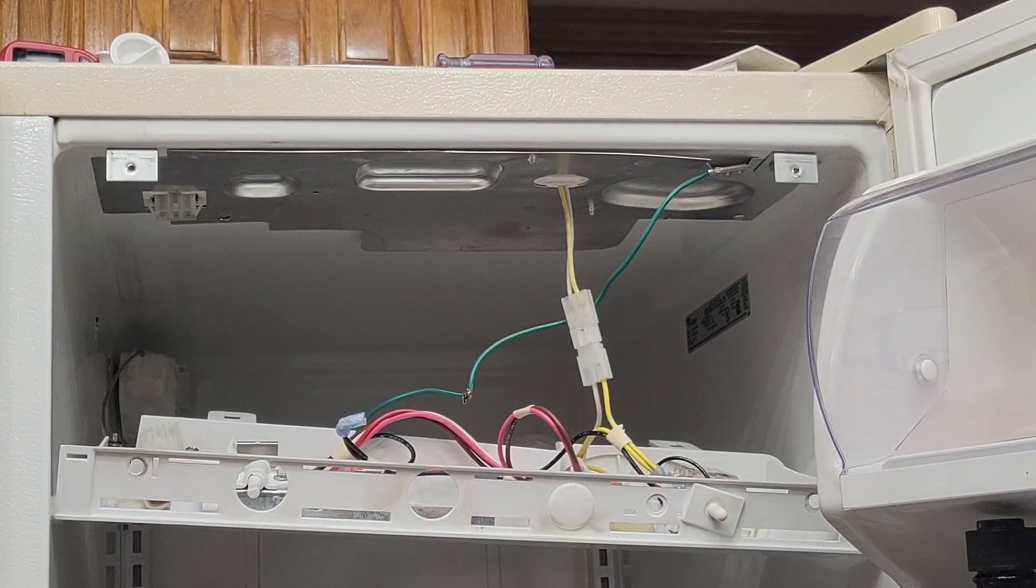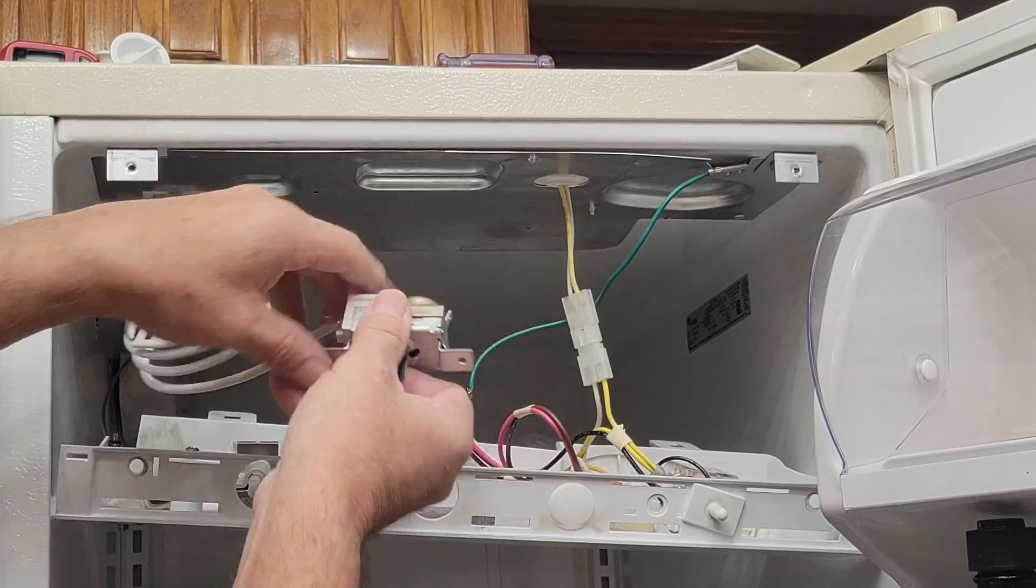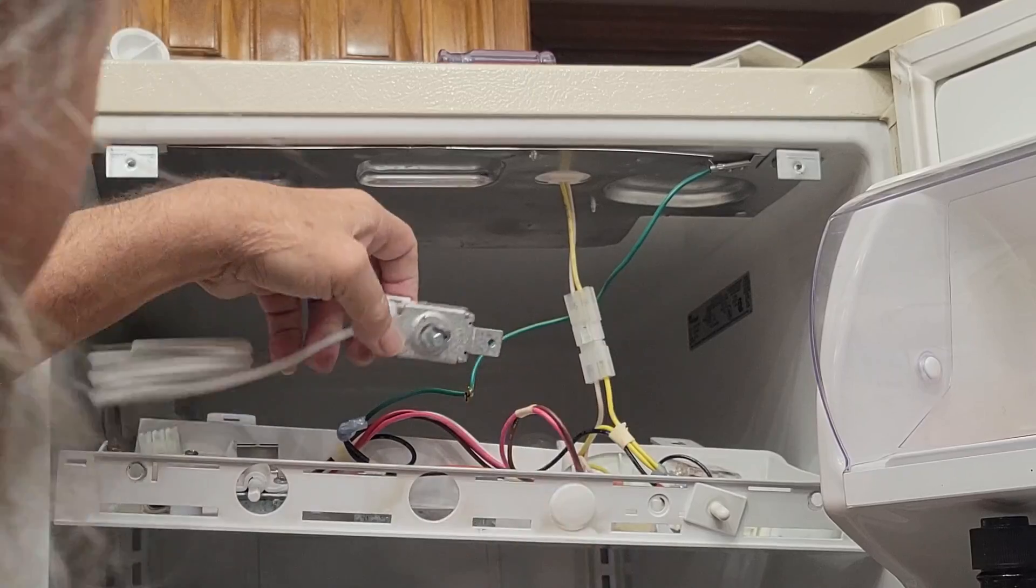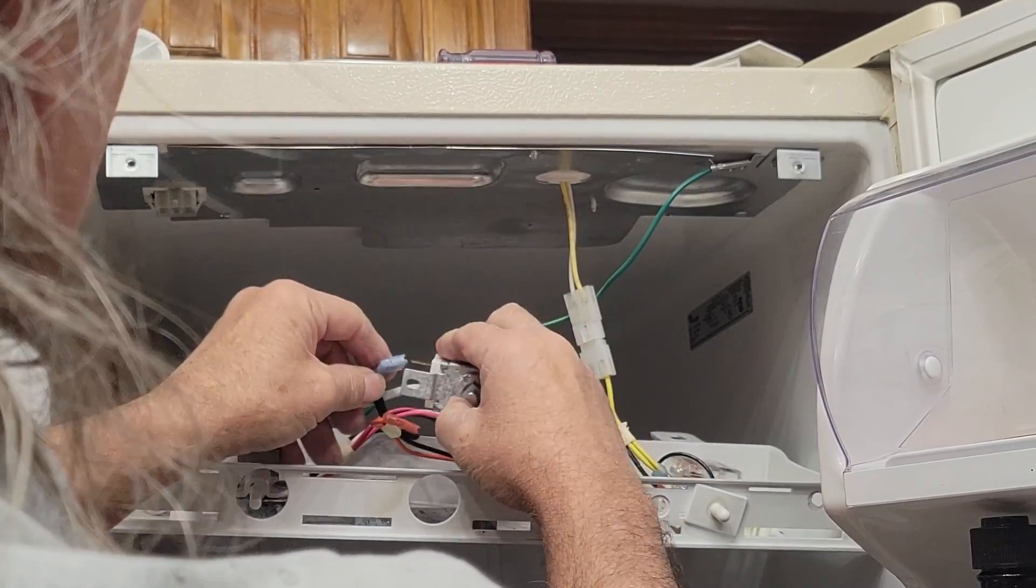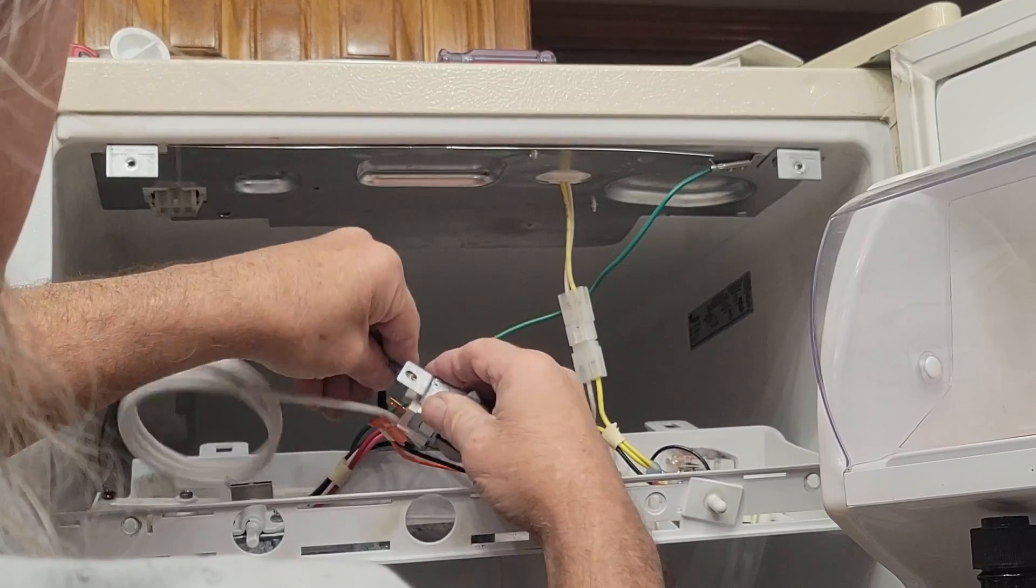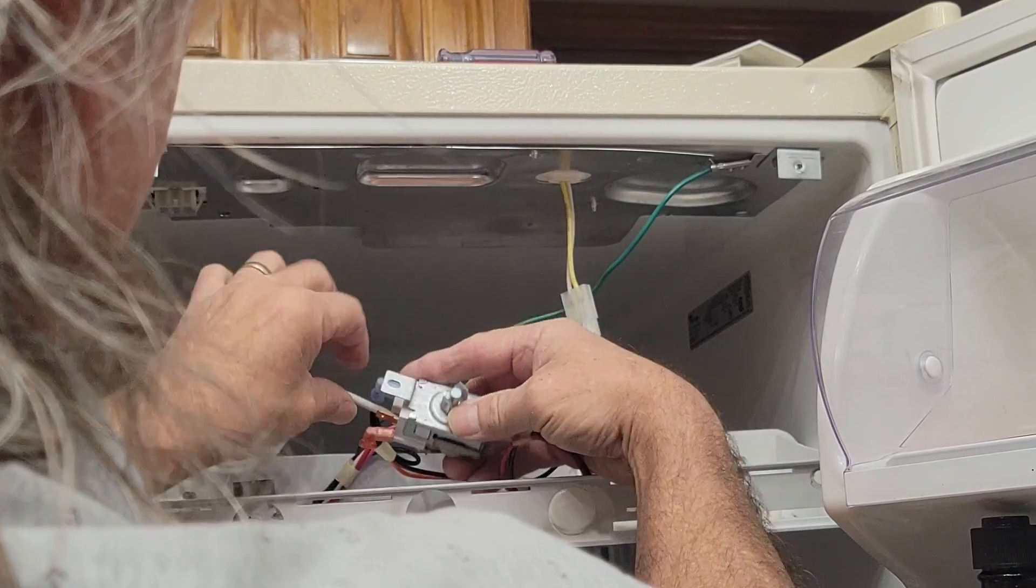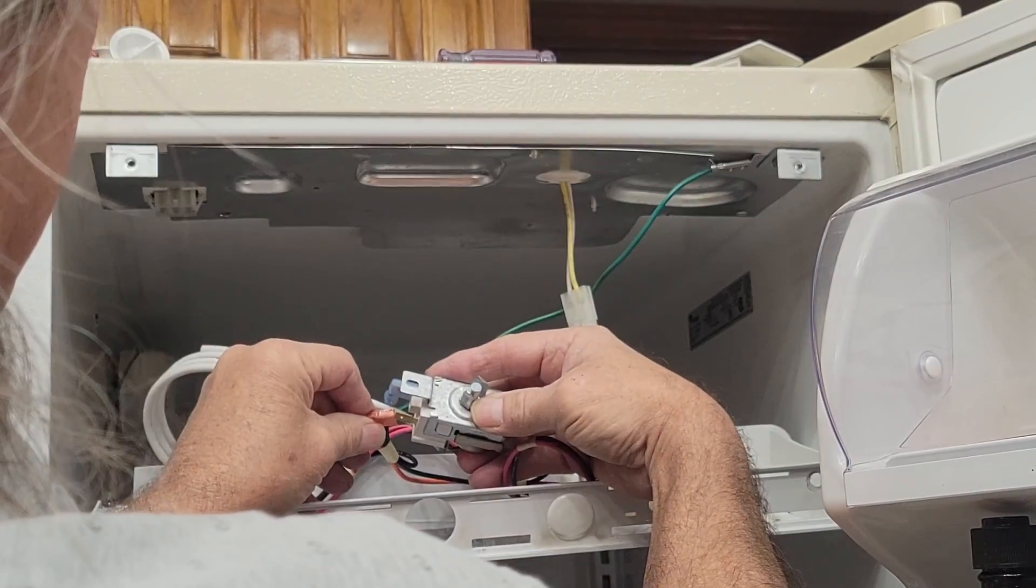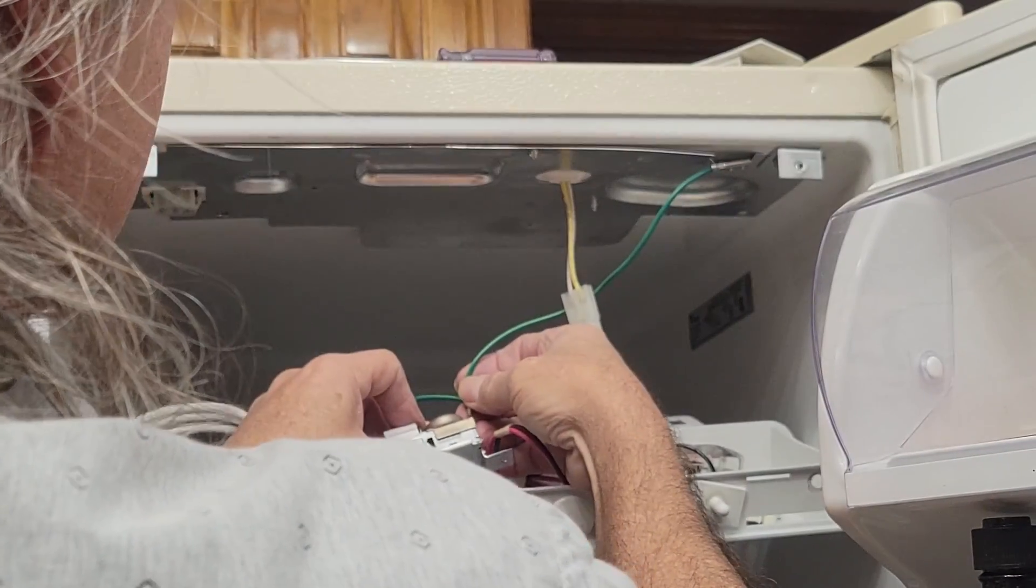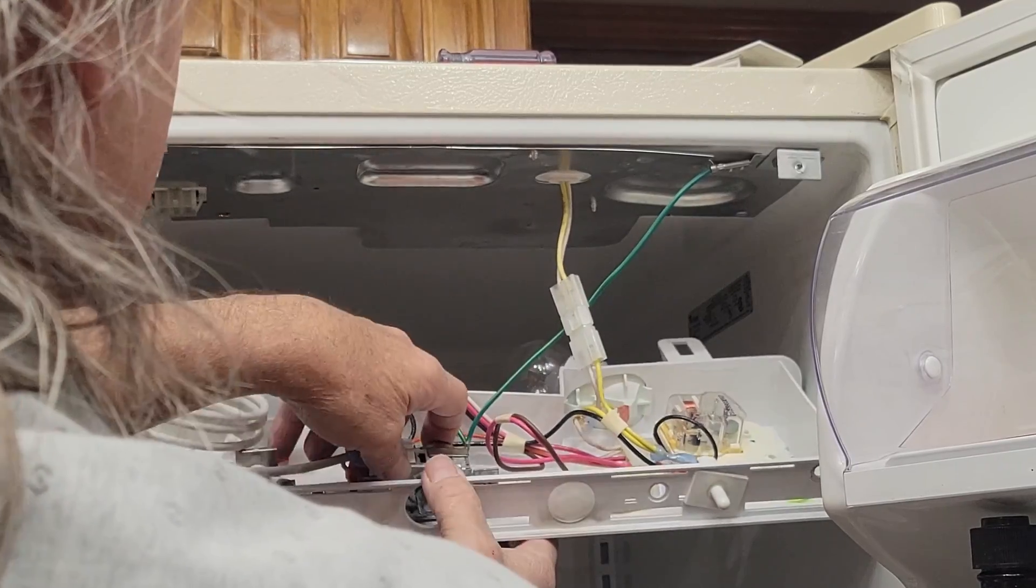We'll take our new thermostat and unravel this, prepare it for its journey backwards. Get the plugs plugged back in as they were before: black on the top and orange on the bottom. Plug our ground in and we'll place it on the bracket.